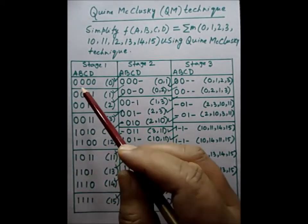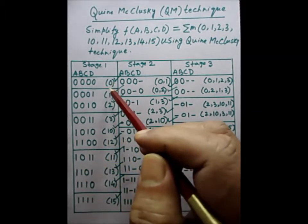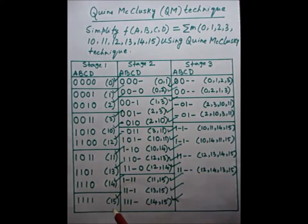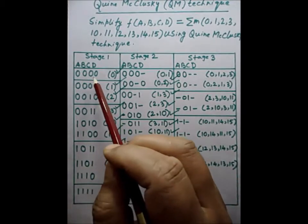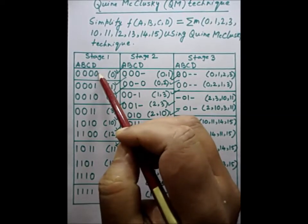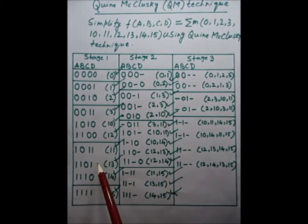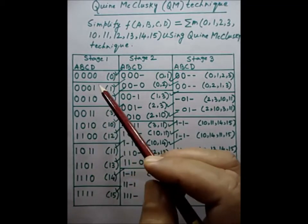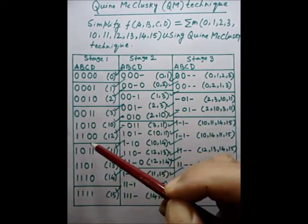We have converted all the decimal numbers into binary numbers; the decimal numbers are written on the right-hand side. Now an important step is grouping: the first group has zero ones, the second group has one '1', the third group has two ones, the fourth group has three ones, and the last group has four ones. So they are grouped according to the number of ones after converting to binary.